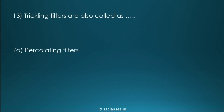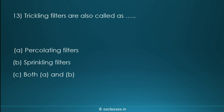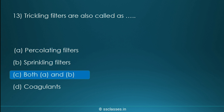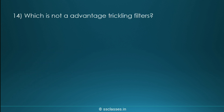Question fourteen: sprinkling filters are also called as what? Options are percolating filters, sprinkling filters, both A and B, or coagulants. The correct answer is both A and B — they are known as both percolating filters and sprinkling filters.